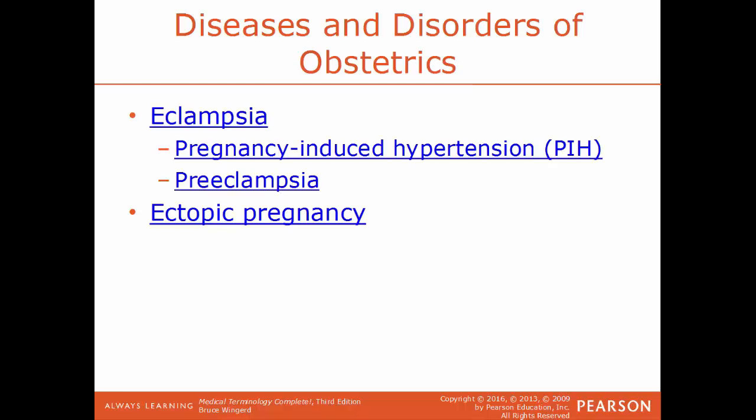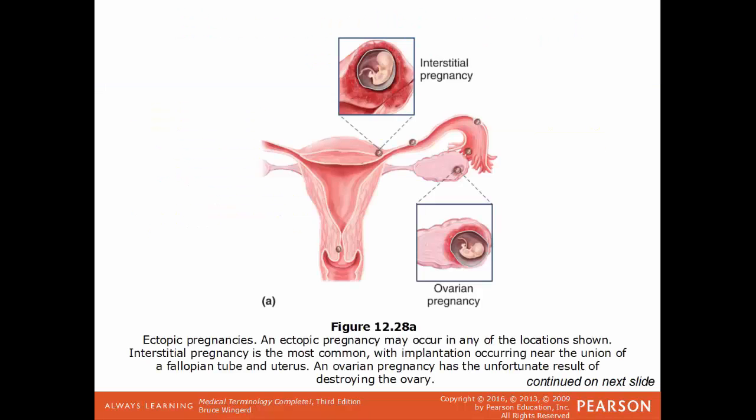Eclampsia puts both mother and baby at risk if not corrected quickly. It is often preceded by preeclampsia — where a pregnant woman is diagnosed with high blood pressure and high amounts of protein in her urine. If preeclampsia isn't detected and corrected early, it can lead to eclampsia. Ectopic pregnancy is where the fetus develops outside of the uterus — usually in the fallopian tube, though it can also occur in the ovary, the interstitial space, or other locations.